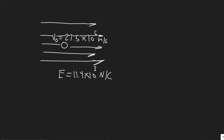In this problem we're told an electron with speed V₀ equals 27.5 times 10 to the 6 meters per second is traveling parallel to a uniform electric field of magnitude E equals 11.4 times 10 to the 3 newtons per coulomb. Part A: how far will the electron travel before it stops? And Part B: how much time will elapse before it returns to its starting point?